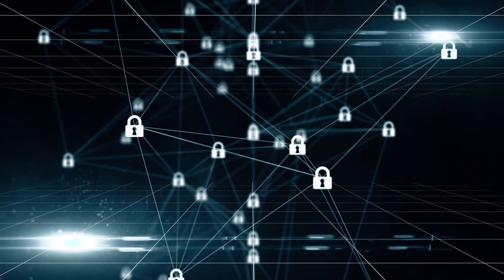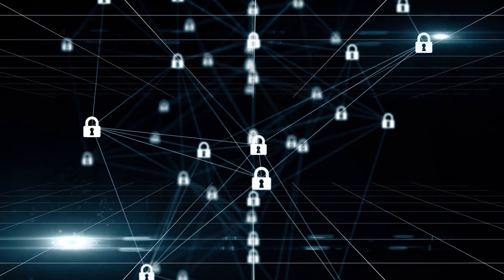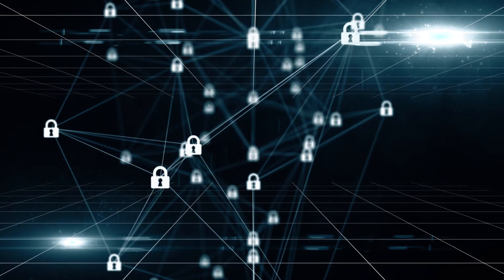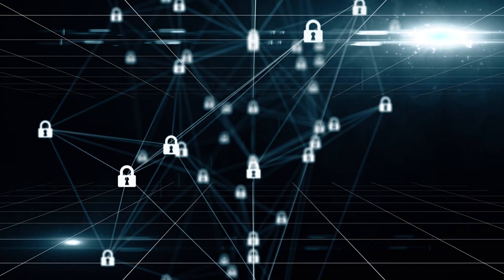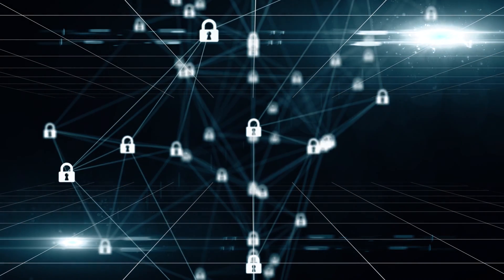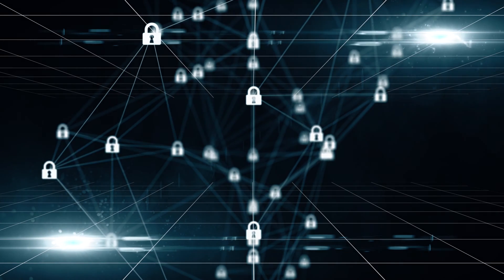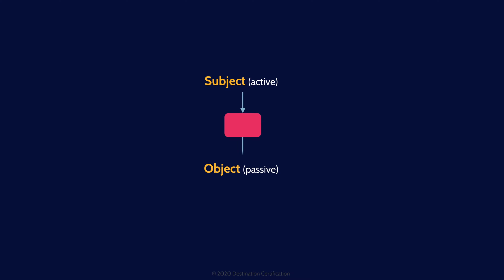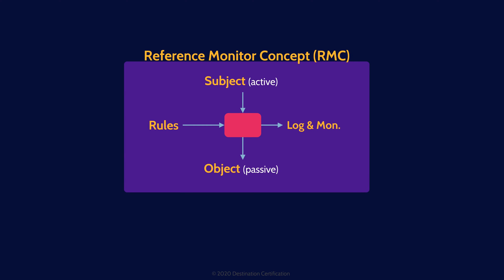Access controls are the collection of mechanisms that work together to protect the assets of an organization. These access controls can be both physical controls like locks and logical controls such as login mechanisms to an operating system. Access controls enable management to specify which users can access what resources and what operations they can perform and provide individual accountability. Fundamentally, every access control system is about controlling a subject's access to an object through some form of mediation. That mediation is based on a set of rules, and all of this is logged and monitored. This is known as the reference monitor concept.